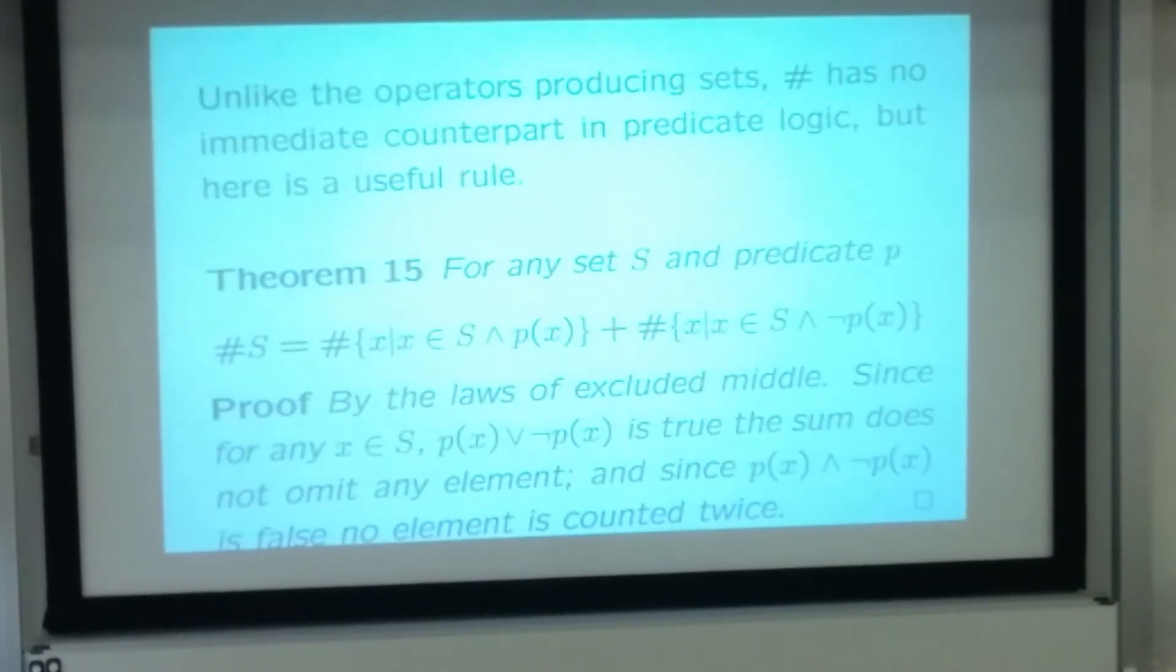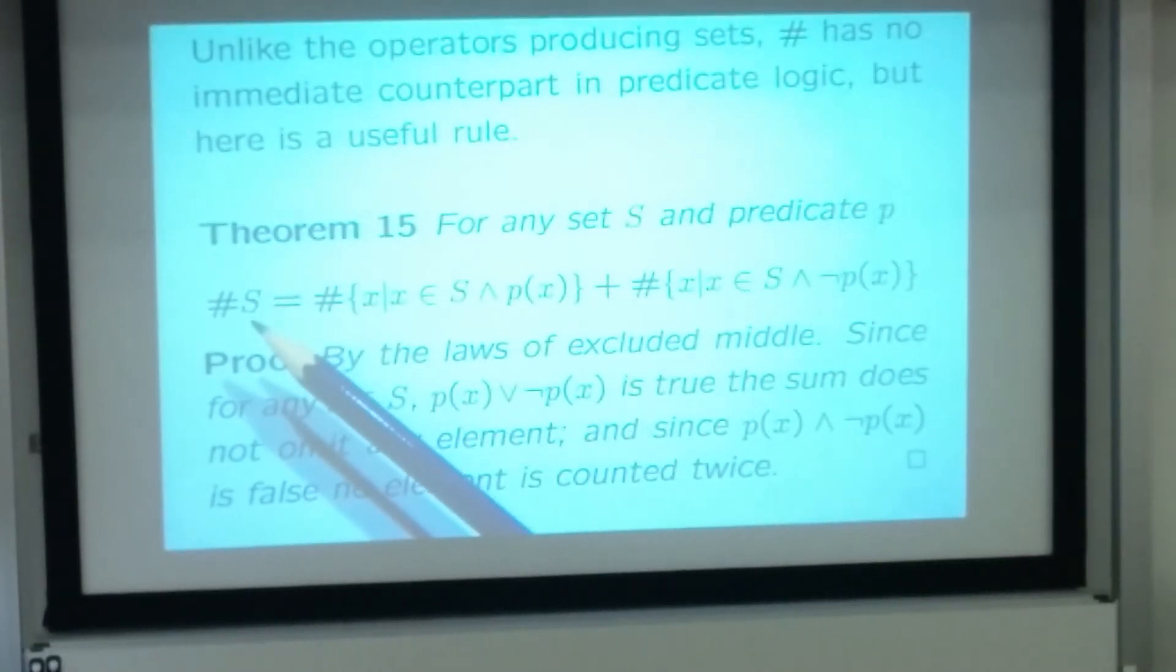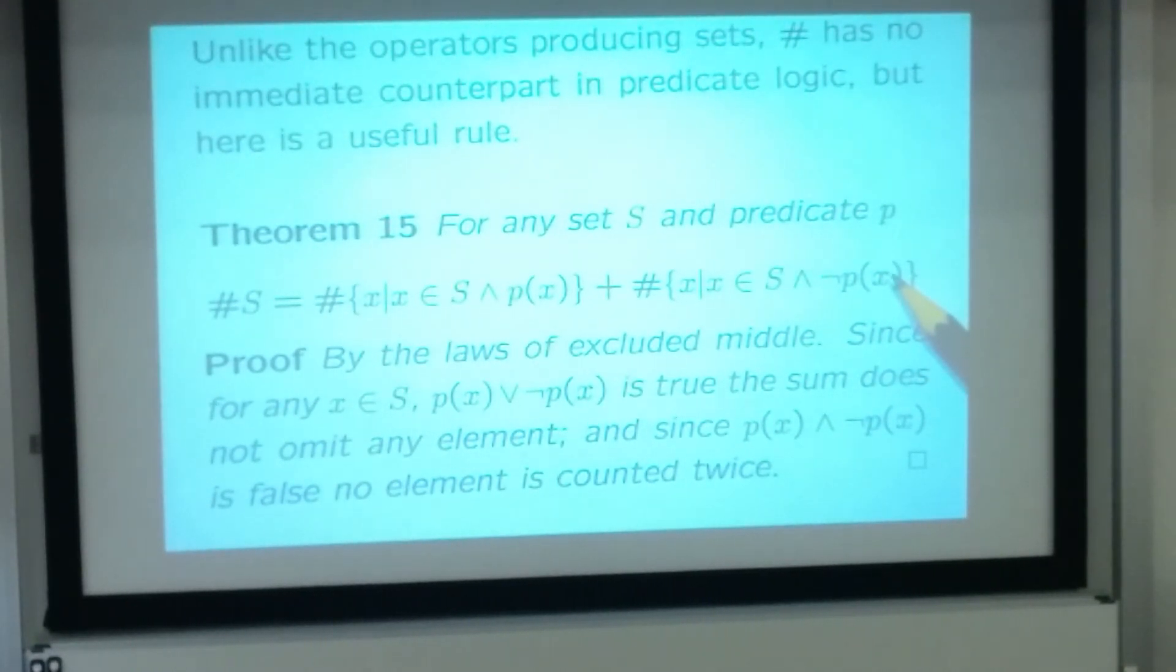And it is this rule that allows us to divide and conquer, to split up the work of thinking about the size of any particular set. So the principle is as follows, if we had any set S, and any predicate P, that might or might not be true of different members of that set, if we want to count the number of elements in S, we can always do so safely by counting, first, the set of elements that belong to S and do satisfy the property P, and then, quite separately, counting the elements in the set of elements that belong to S and do not satisfy the predicate P. Alright?